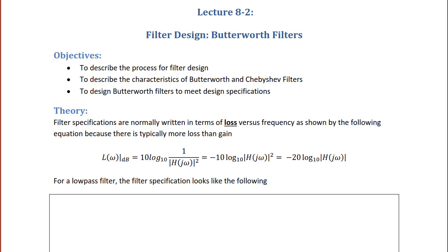Filter specifications are normally written in terms of loss versus frequency, because there is typically more loss than gain. So the loss in decibels would be 10 log base 10 of 1 over the magnitude of H(jω) squared, which equals negative 10 log base 10 of the magnitude of H(jω) squared, or negative 20 log base 10 of the magnitude of H(jω).